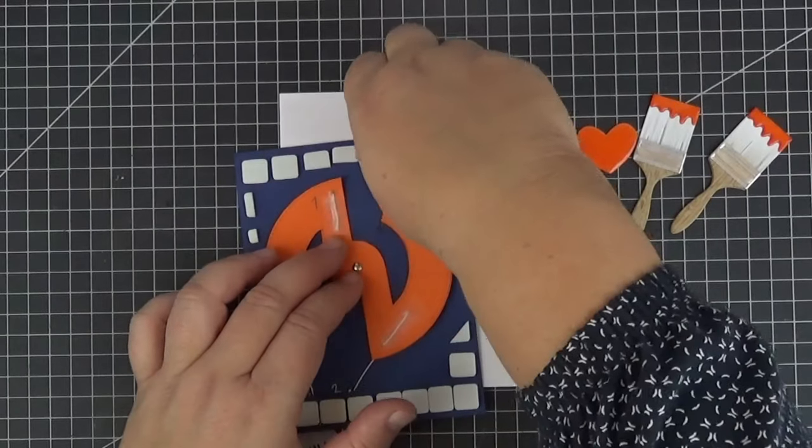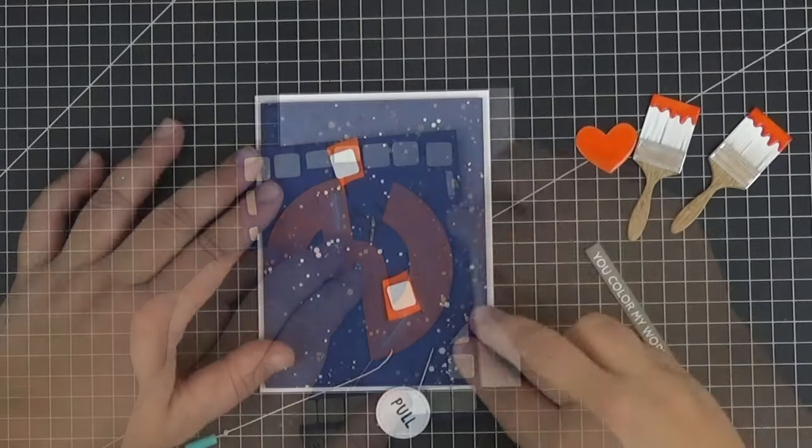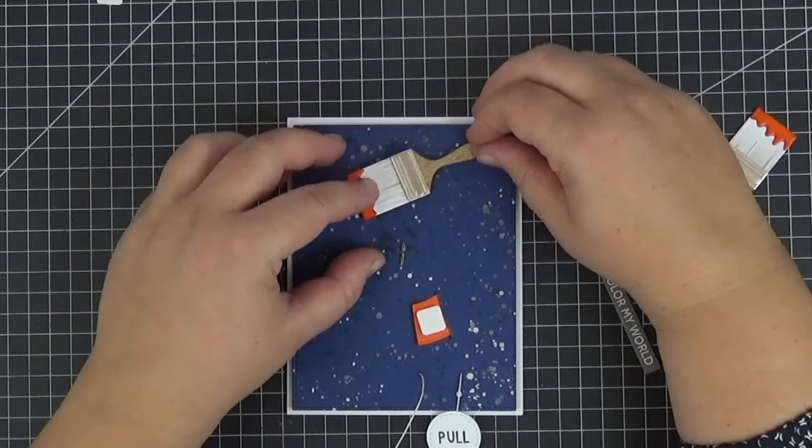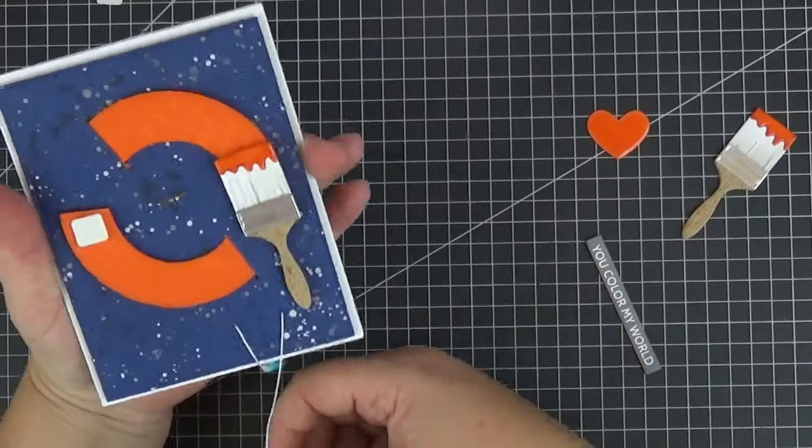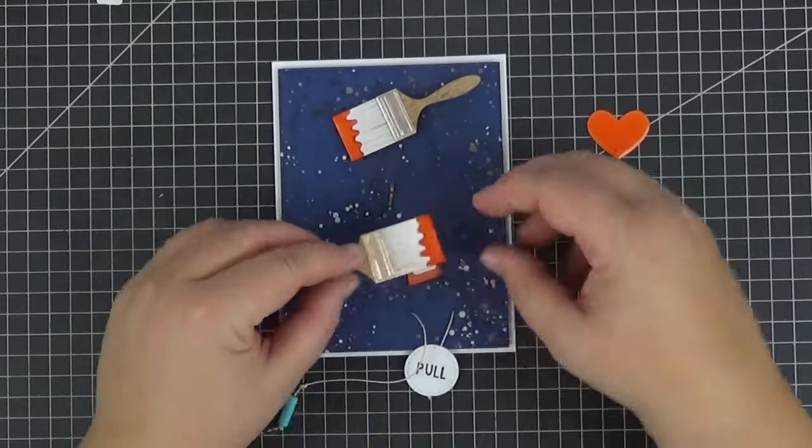Off camera I added some foam squares to the back of the panel and after adhering it to the card base we can finally attach the little brushes. Do that loosely at first and check the movement to see if it looks good before pressing down firmly.